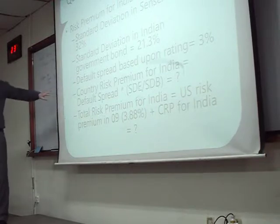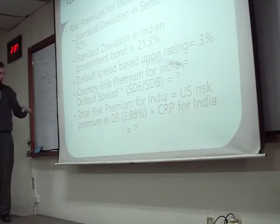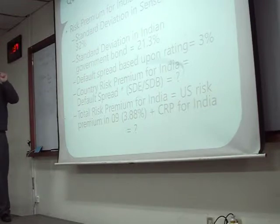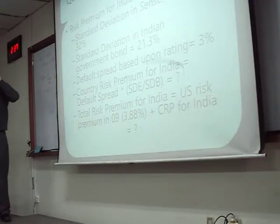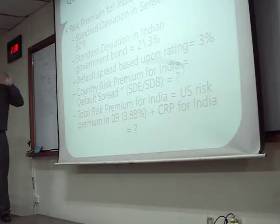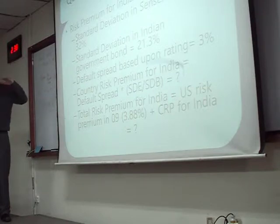We know our default spread, but this is for bonds. We need to change this to a number for stocks. How do we do that? We find the standard deviation of the stock market and the standard deviation of the bond market. Which goes up and down more — bonds or stocks? Stocks have a higher standard deviation. How much higher? 1.5 — that's about 50% higher, or 150% compared to 100%.